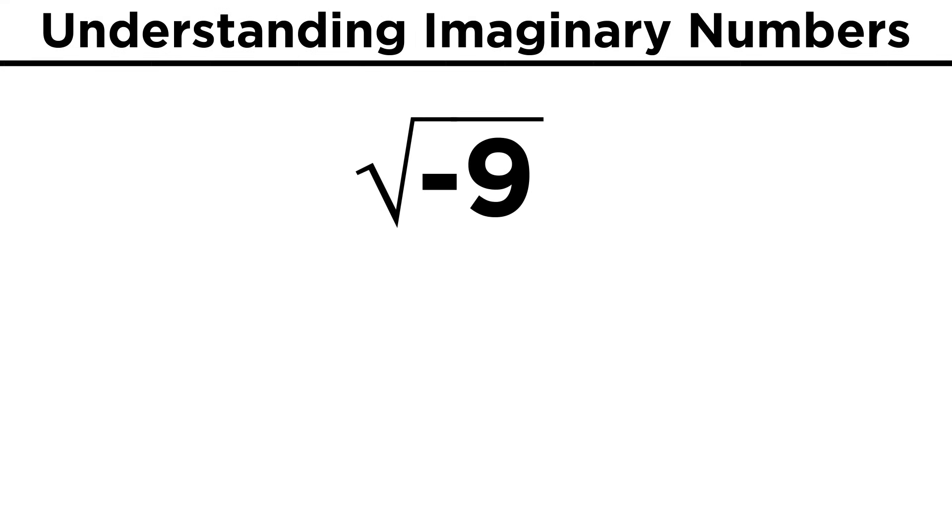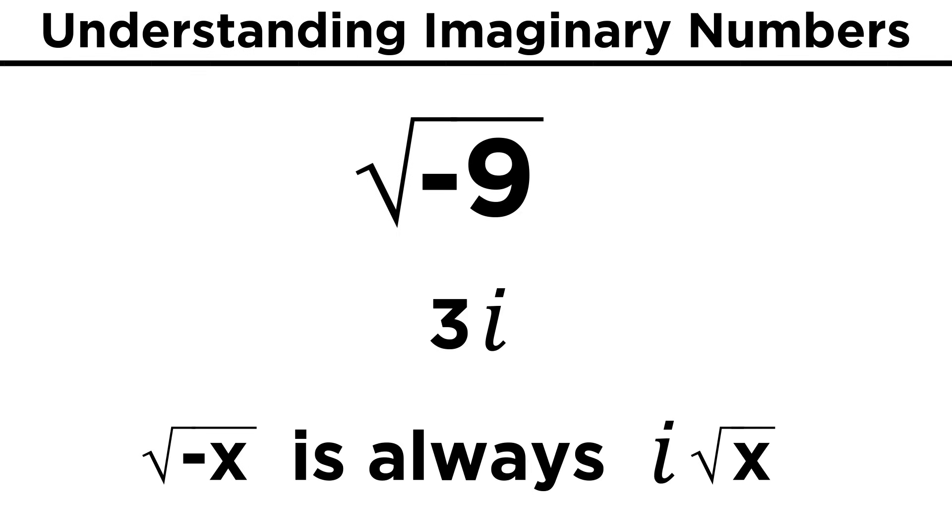i can also be found with other numbers. Take the square root of negative nine, for example. This can be expressed as root nine times negative one, and therefore root nine times root negative one. Root nine is three, and root negative one is i, so we get three i. In this way, the root of negative x will always be i root x.